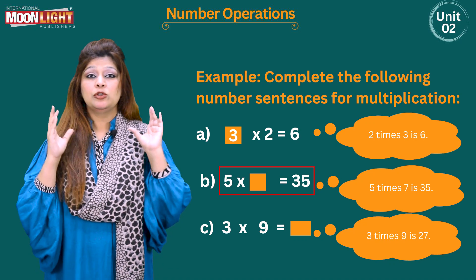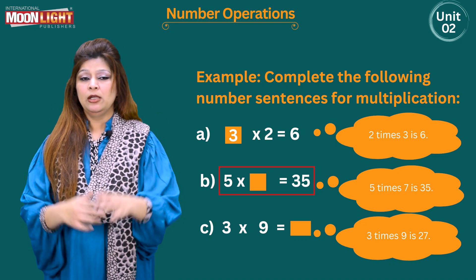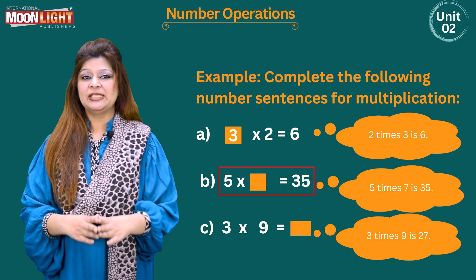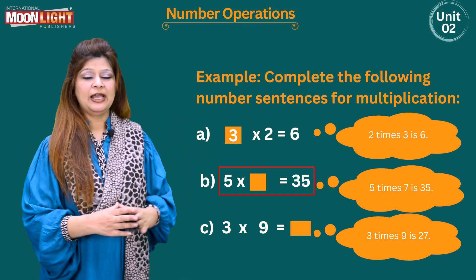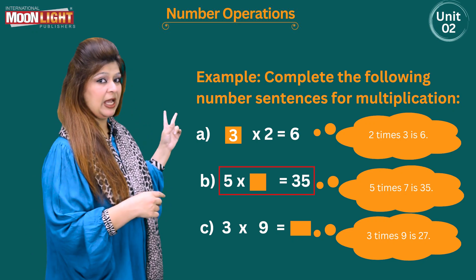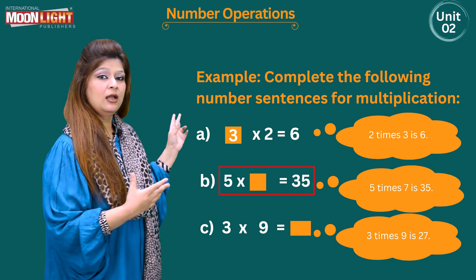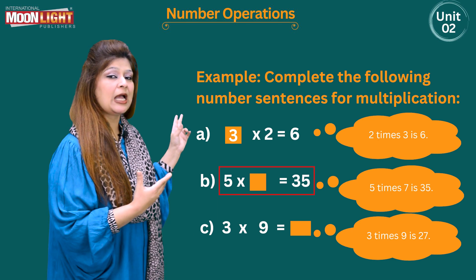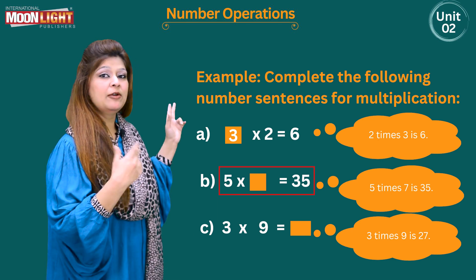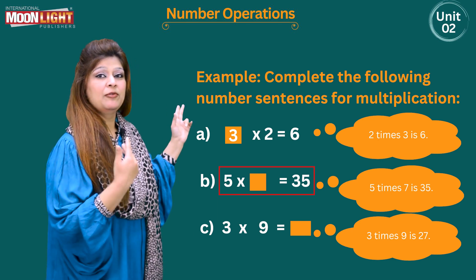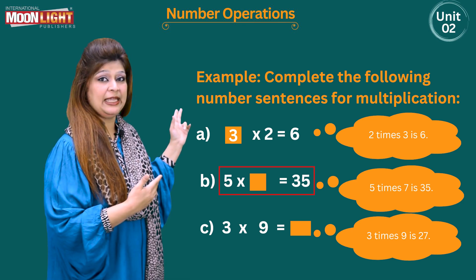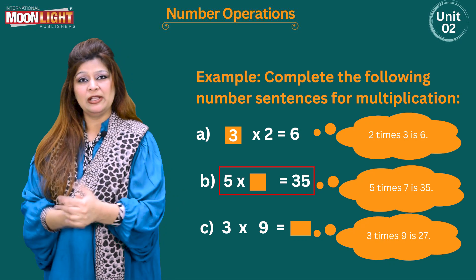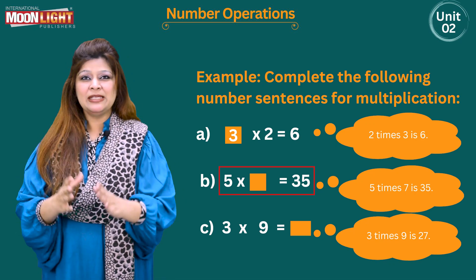You need to recall up to that you are going to get the number 35. So 5 times table: 5 ones are 5, 5 twos are 10, 5 threes are 15, 5 fours are 20, 5 fives are 25, 5 sixes are 30, and 5 sevens are yes, 35.